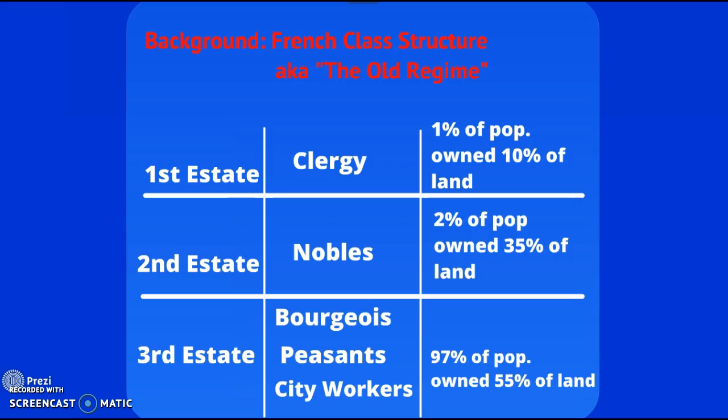A lot of the people in the clergy came from the nobility, so the people in charge of the Church are nobles. All the bishops — in order to be a bishop, you actually had to come from a noble family in France. The third group of people, and this is where almost everyone lived, was the Third Estate.